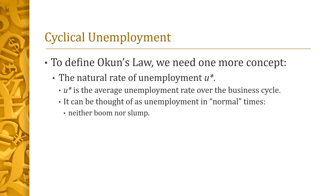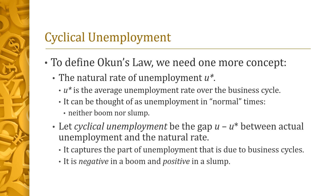We are almost ready to state Okun's Law, but we need one more concept: the natural rate of unemployment, denoted U*. It can be interpreted as the average unemployment rate in a given economy over the business cycle. Like potential output, the natural rate of unemployment captures the level of unemployment in normal times, when the economy is neither in a boom nor in a slump. Finally, we define cyclical unemployment to be the difference between actual unemployment U and the natural rate U*. Cyclical unemployment is that component of unemployment that fluctuates over the business cycle. In a boom, the output gap is positive but cyclical unemployment is negative, since U lies below U*. In a slump, the output gap is negative but cyclical unemployment is positive, since U exceeds U*.